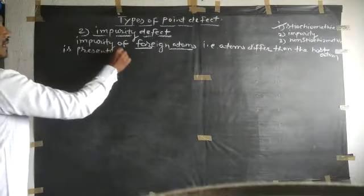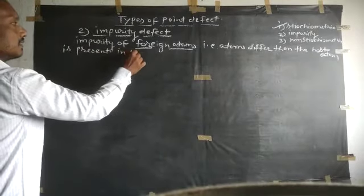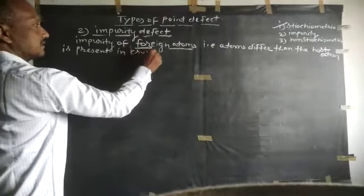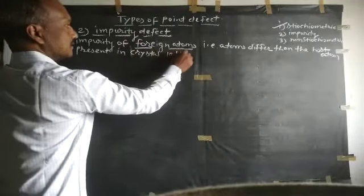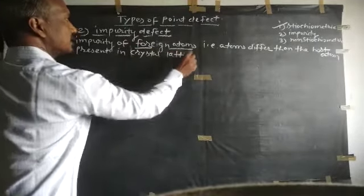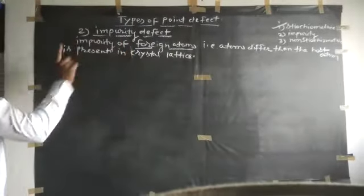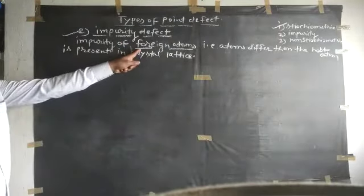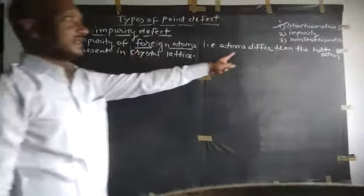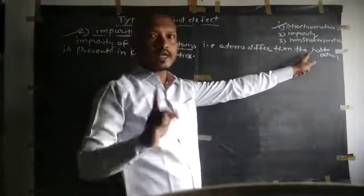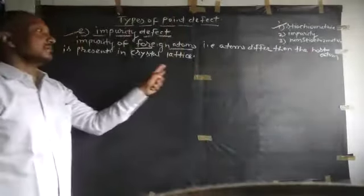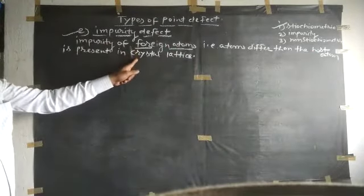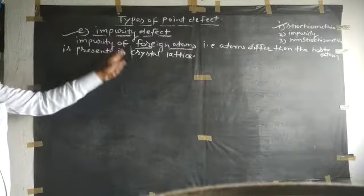These foreign items are present in the crystal lattice. Foreign items — that is, items different from the host items — are present in the crystal lattice. This is called the impurity defect.